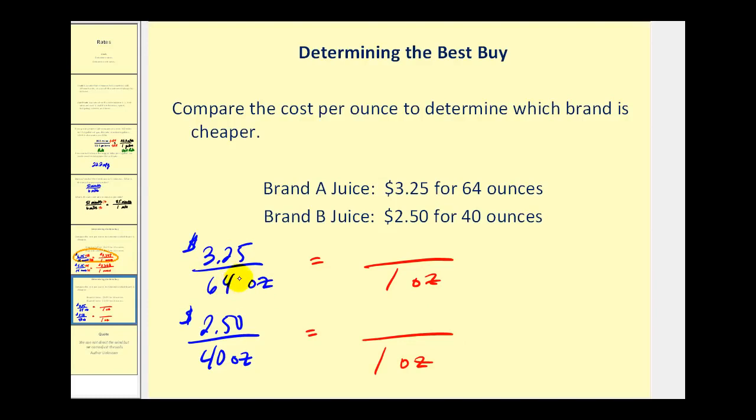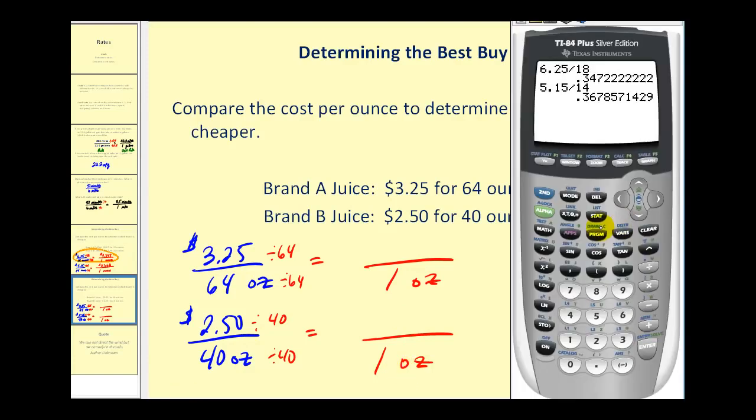On this first rate, we would divide by 64. And on the second rate, we would divide by 40 to make our denominators equal to one ounce. Let's go back to our calculator. $3.25 divided by 64, and $2.50 divided by 40.